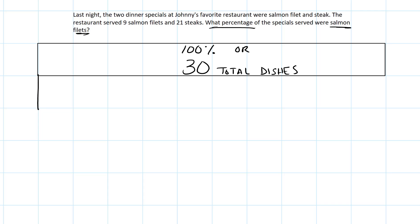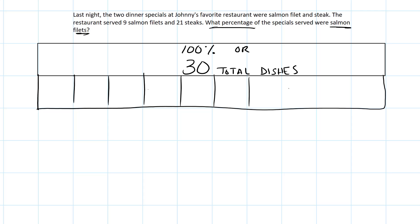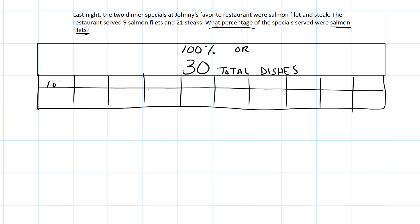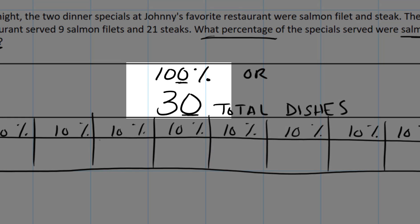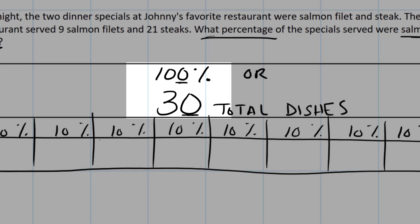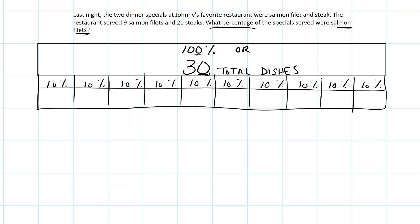Now we're going to break this down into 10% sections, so each of the boxes is worth 10%. I've got to break 30 down by shrinking by one place value, and that leaves me with three dishes per 10% box.